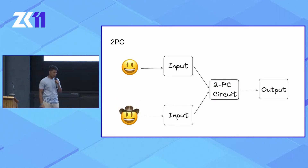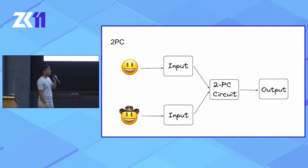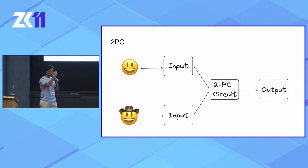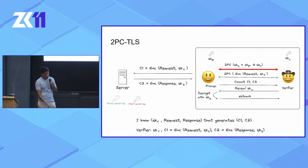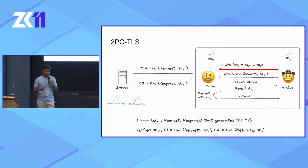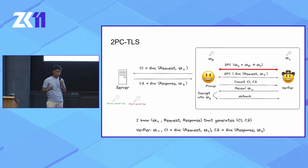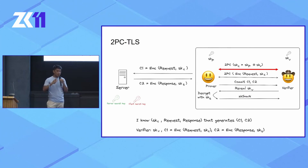A solution was proposed a few years ago to generate TLS proofs using 2PC — two-party computation, a specific case of multi-party computation. In 2PC, both parties have their own private inputs which they feed into a circuit to compute the output. Approaches include garbled circuits and FHE. To prevent the prover from forging valid responses, we compute the TLS session keys inside a two-party computation, such that both the prover and the verifier only have a share of the client secret key — not the whole key. That means the prover can no longer forge a valid response from the server.